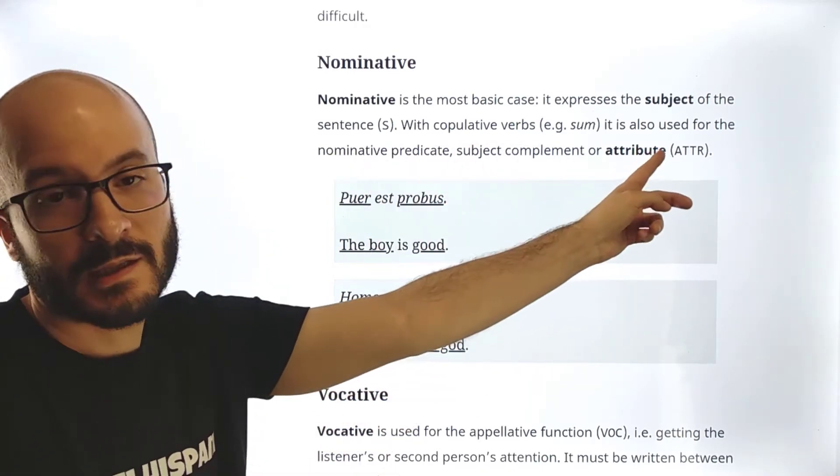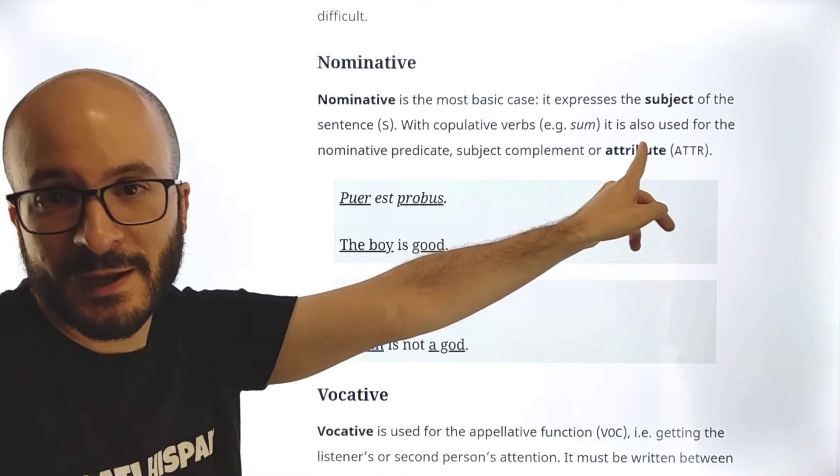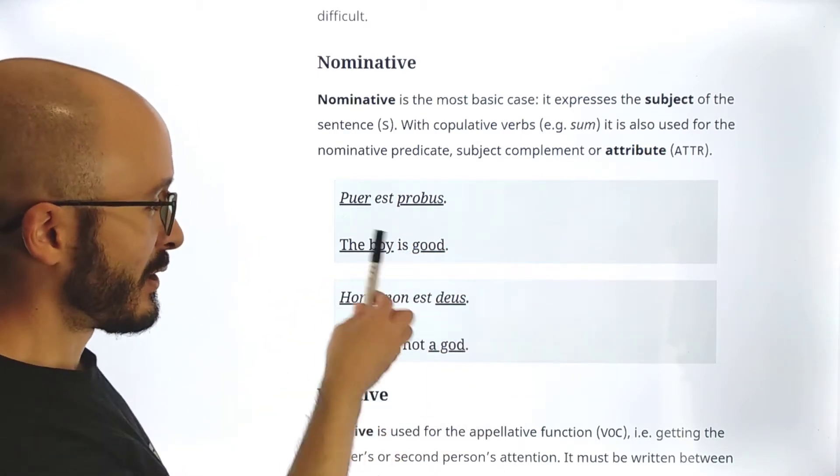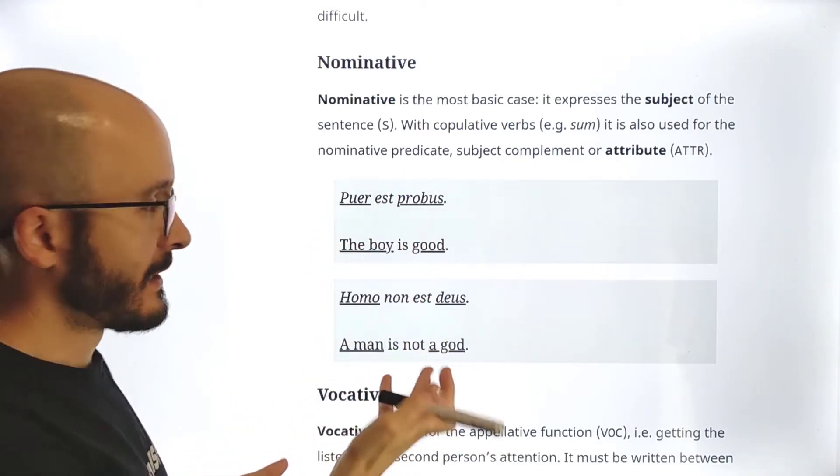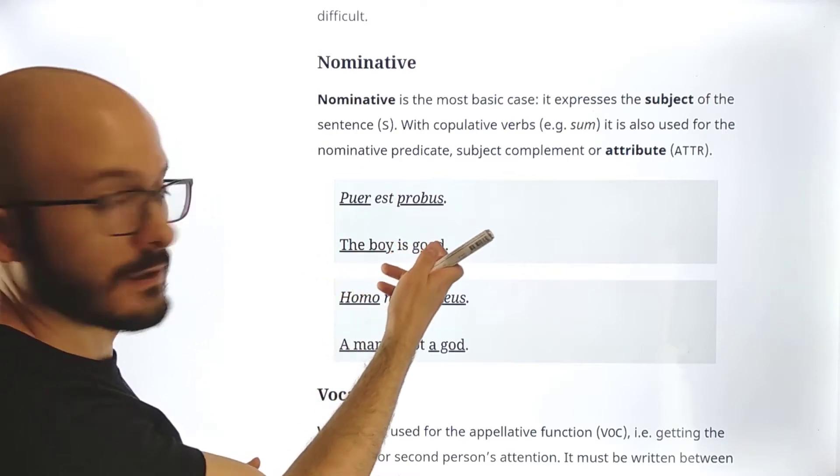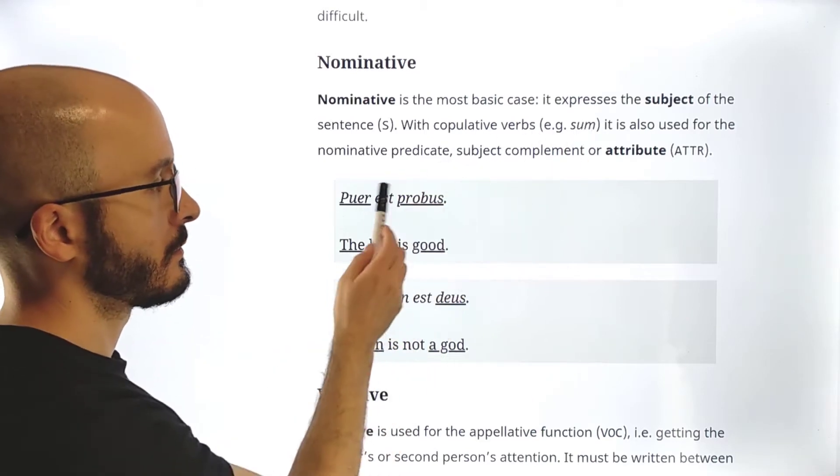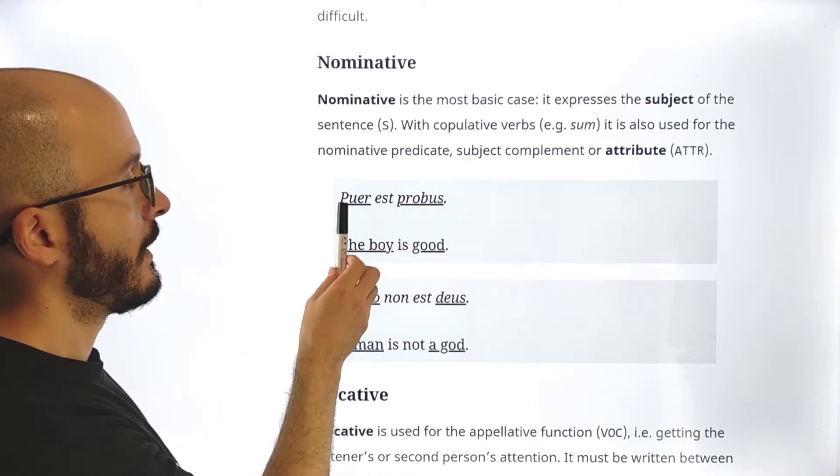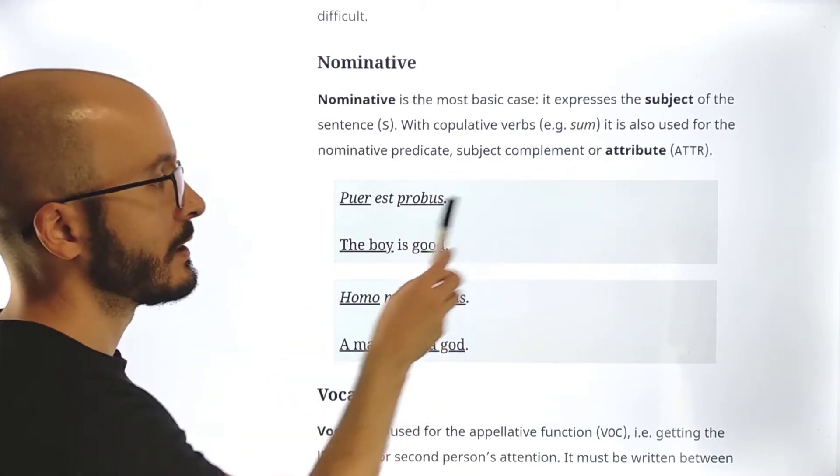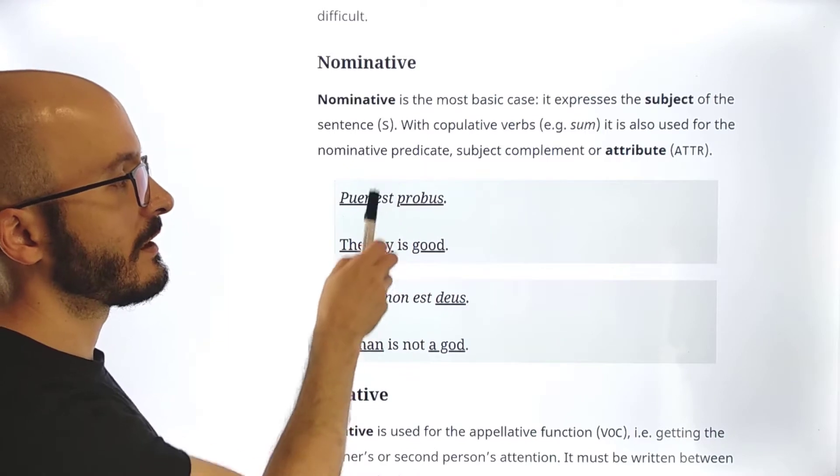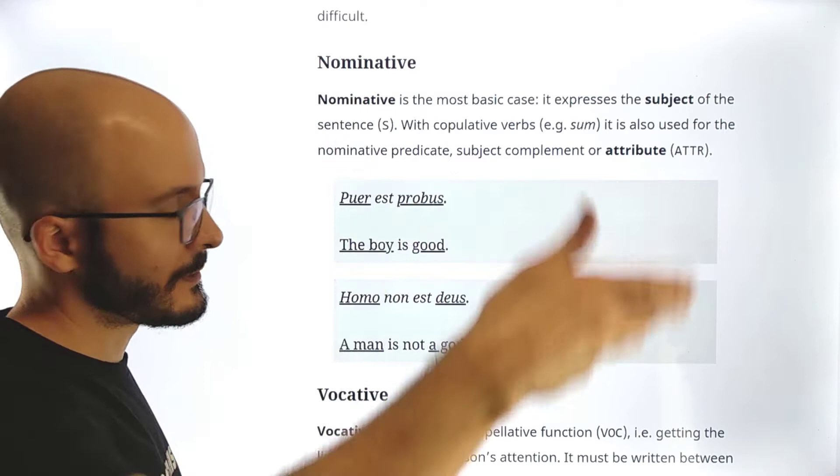All of these names are the same, but I prefer attribute, just because it's shorter, and that's how we call it in Spanish. So here we have puer est probus, which translates as the boy is good. So here we have the verb sum, est. So puer is nominative because it's the subject, and probus is the attribute because it's the complement with the verb to be.